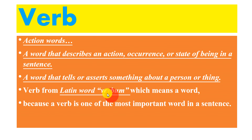Let's discuss the types of verbs. There are two main types of verbs: the transitive verb and the intransitive verb. So what is a transitive verb? A transitive verb is an action verb that requires a direct object to complete its meaning. In other words, the action is done to someone or something. Transitive means passing over, because the action is passed over from the doer to an object.